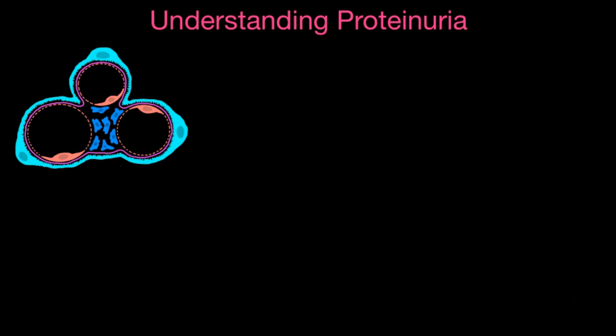This is a cartoon we've been using showing a cluster of capillary loops, including endothelial cells, the basement membrane, and podocytes, or epithelial cells, located at the glomerulus.